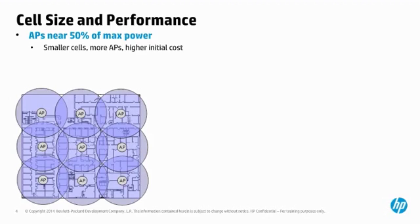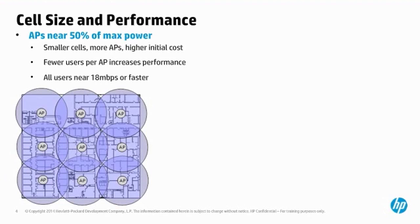However, all users on an AP share the medium. Each AP coverage area defines a single collision domain, like an old-school Ethernet hub. Smaller cell sizes mean that a smaller number of users must contend for the same bandwidth, which increases performance. Also, since the APs are closer together, no user is ever very far from an AP. All users will tend to connect at around 18 megabits per second or faster, and since all users transmit at a relatively high data rate, performance improves for everyone.